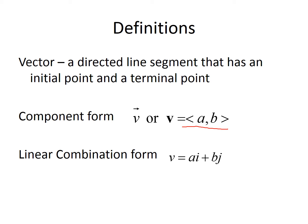We can also see it written in linear combination form. This is not as popular and is used mostly in colleges. i represents your x component and j represents the y component.